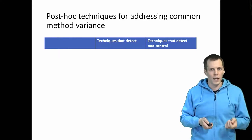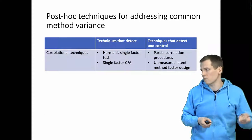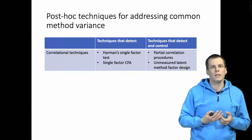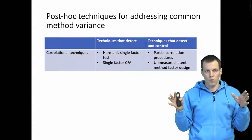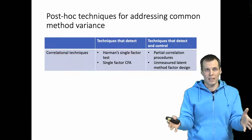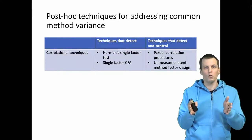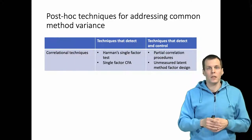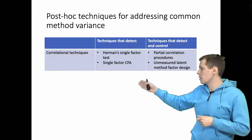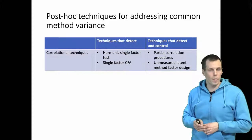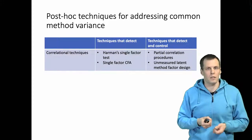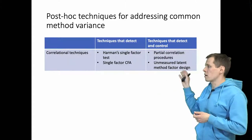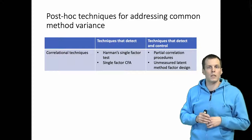The first class of techniques is what I call correlational techniques. These basically take the normal data correlation or covariance matrix and only the variables of interest measured with one measurement method, and try to explain correlations using different factor analysis techniques. Techniques that belong to this class are the Harman single factor test, single factor confirmatory factor analysis, various partial correlation procedures, and the unmeasured latent method factor design.